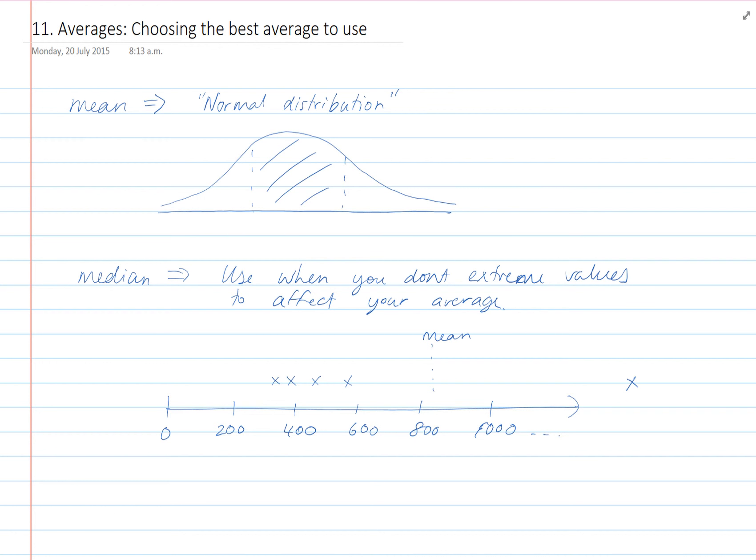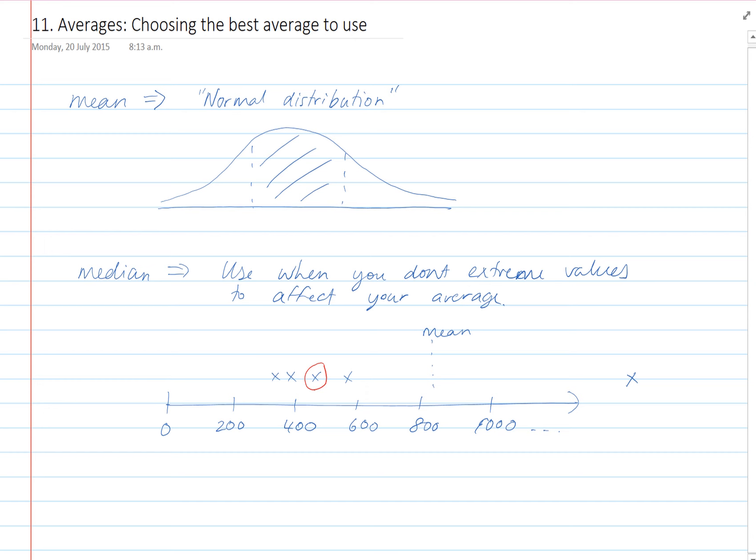So in this case, we'd choose the median, which is the middle value, that one there, which would be about, say, $480,000. That's a good example of where the median is more appropriate because it doesn't count the extreme values.